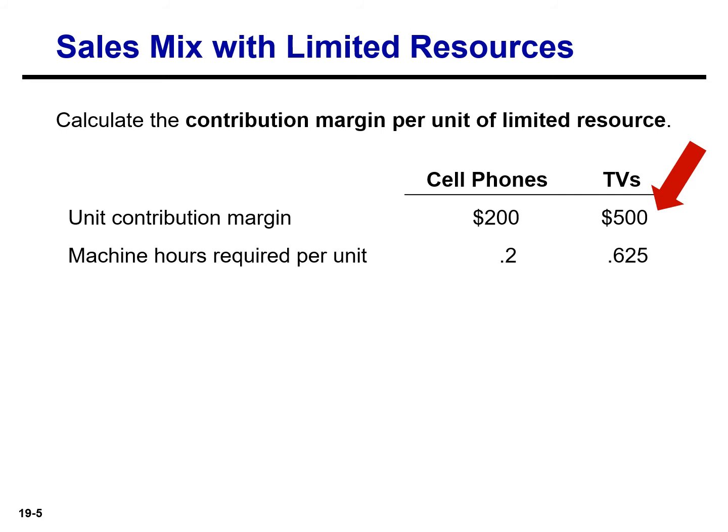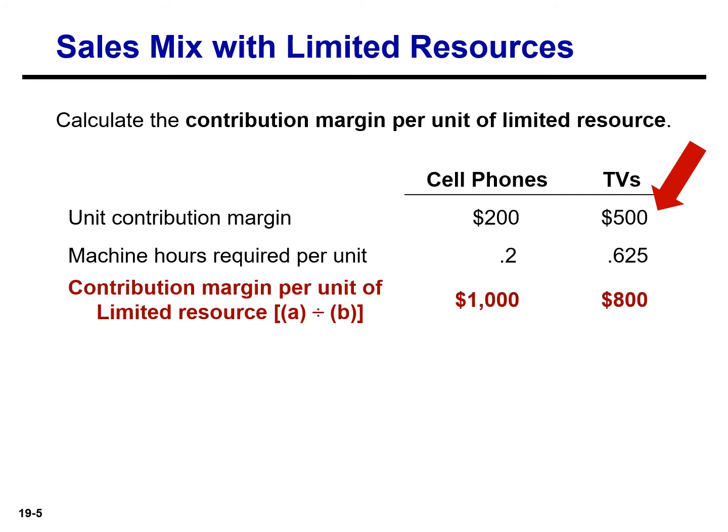To find the contribution margin per machine hour, divide the unit contribution margin of each product by the number of units of the limited resource required for each product. The calculation shows that the cell phones have a higher contribution margin per unit of limited resources.